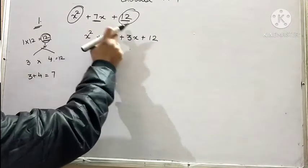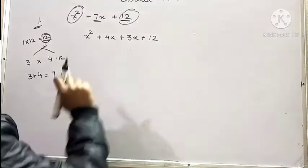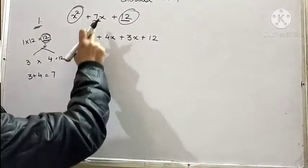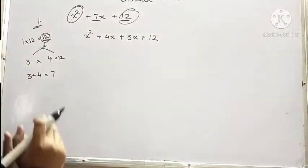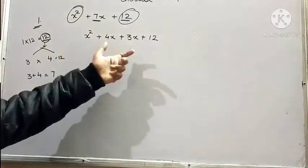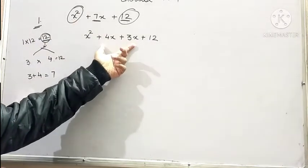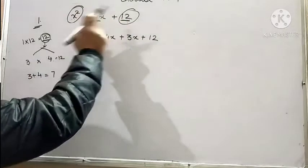If you multiply 12 and x square, you will get 12x square. And if you multiply 4x and 3x, you will get 12x square. And when you add 4x and 3x, you get 7x. So we have split the middle term in a manner that the product of the two terms is equal to the product of its extremes. These are the extreme terms.